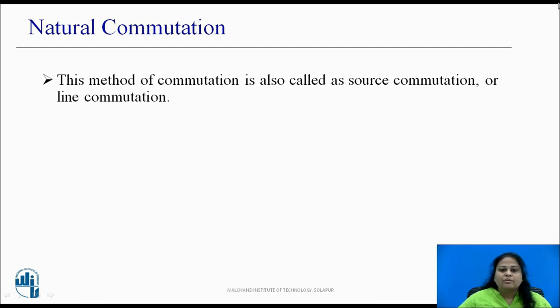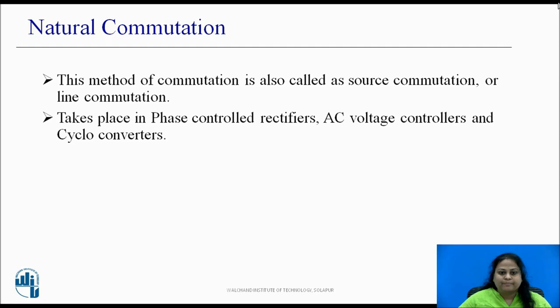Since the SCR turns off automatically due to the negative supply voltage and without using any additional circuit, it is known as natural commutation. This method is also known as line commutation or source commutation. This type of commutation takes place in phase control rectifiers, AC voltage controllers, and cyclo-converters.